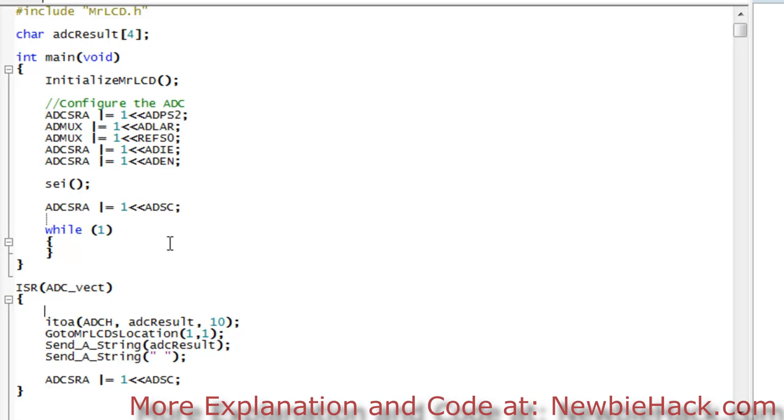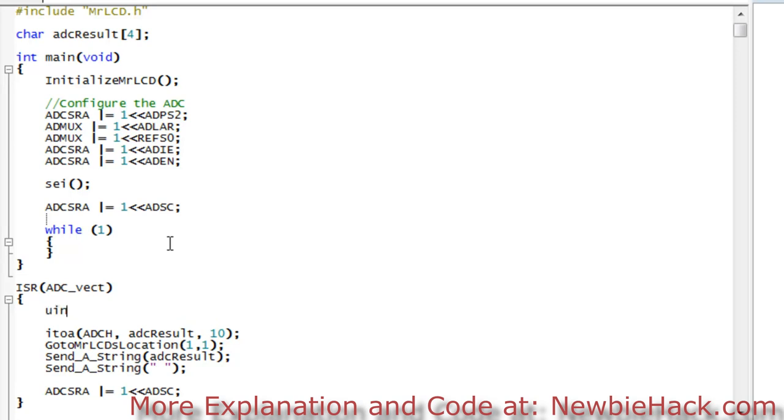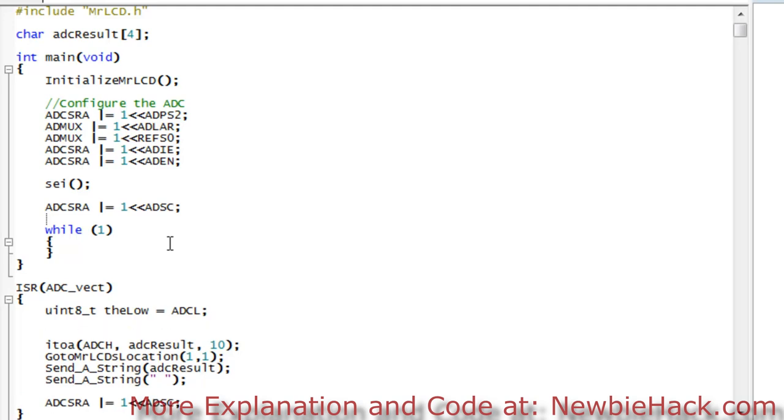So I'm putting it outside of all the routines to make it a global variable. And we will try the version of this 10-bit with the ADLAR equal to one, making sure that that bit is set and making sure that it's left adjusted. That is the harder method, but let's go ahead and do that first. We can take care of the easier method at the end. The first thing I want to do is create an 8-bit integer, uint8. And we're going to call that the low. And this is going to be equal to the ADCL, since we need to read the ADCL first before we read the ADCH.